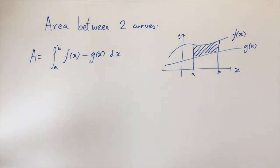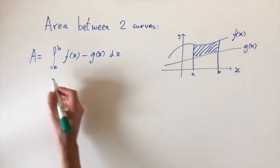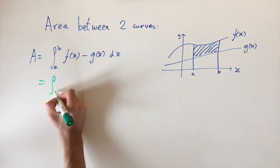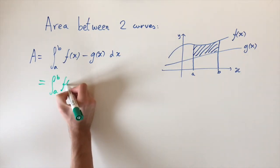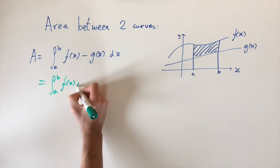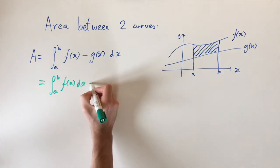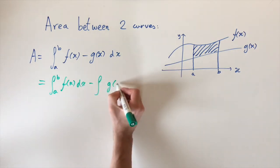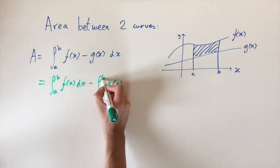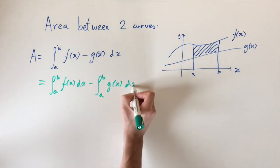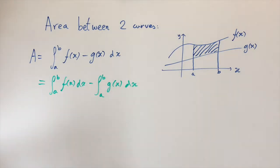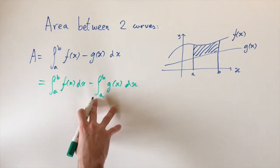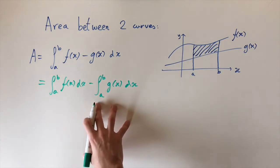Let's think about why this formula makes sense. Integration is linear, so this is essentially saying we integrate f first between a and b, then subtract off the integral of g(x) between the limits a and b. So we integrate f, then subtract the integral of g.